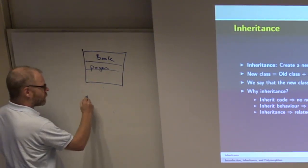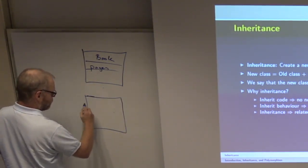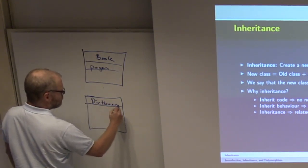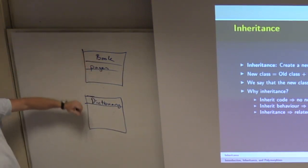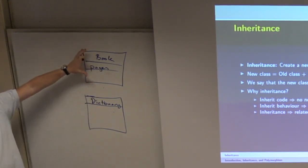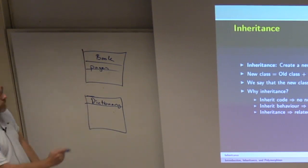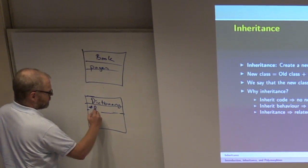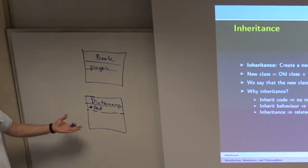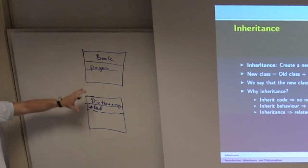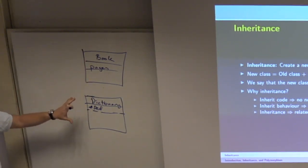We can create a new class called Dictionary by extending Book. The class Dictionary extends Book — it will get all the properties from Book, and then we can add a few more properties, like number of definitions. We will be able to create new classes based on another class. The new class will have all the properties and methods from the original, plus a few extra we are adding. This is the key for inheritance.